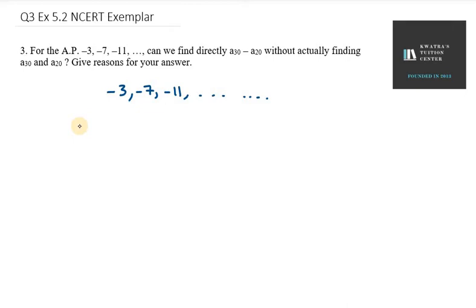So yes, it is possible to find A30 minus A20. So first of all, we will write the general term here, that is AN equals A plus (N minus 1)D.